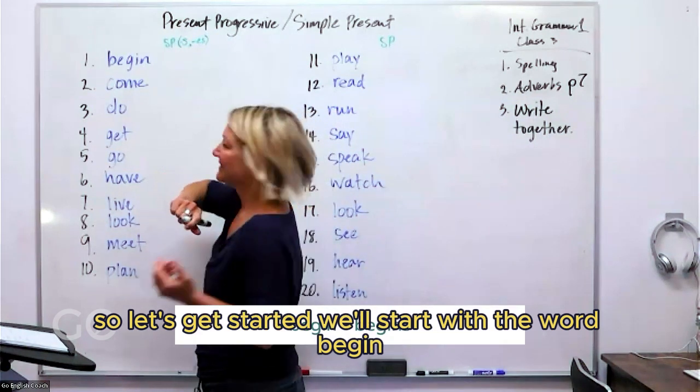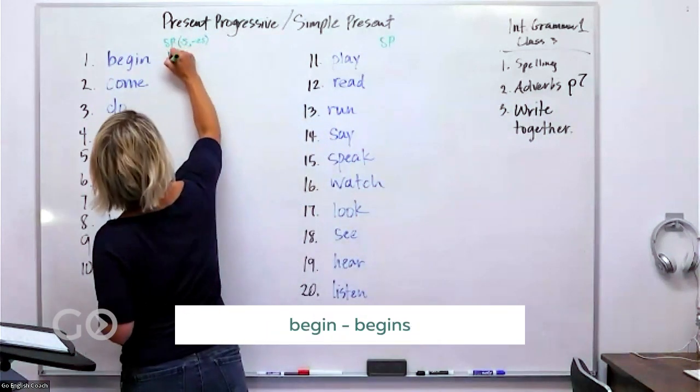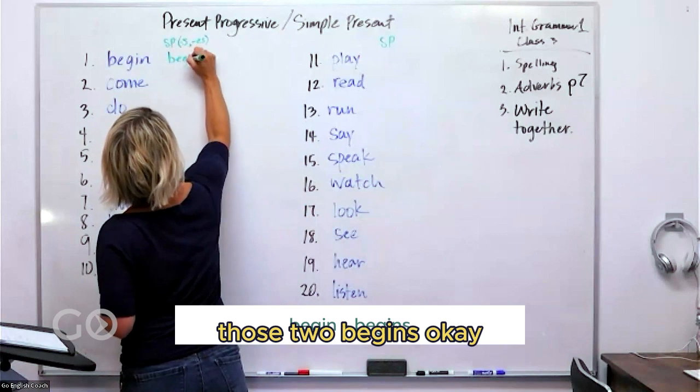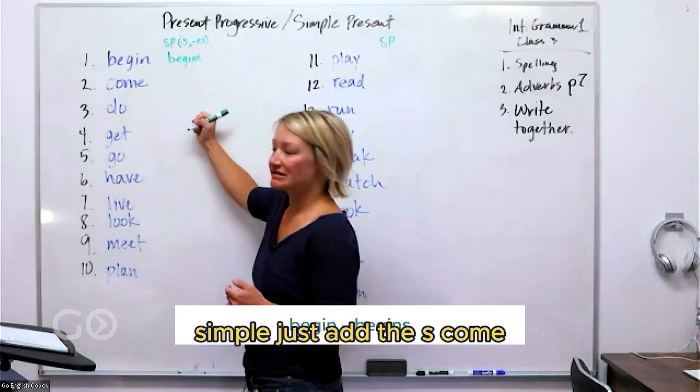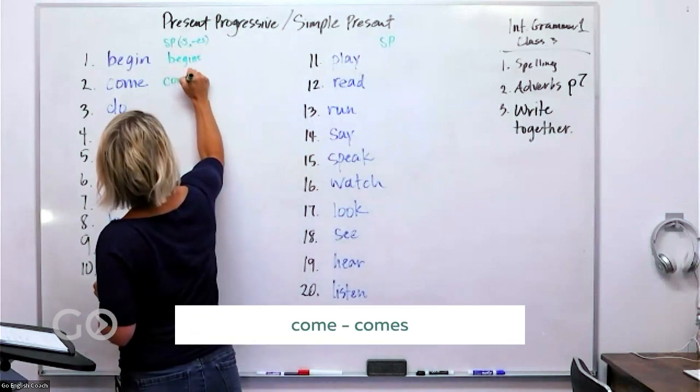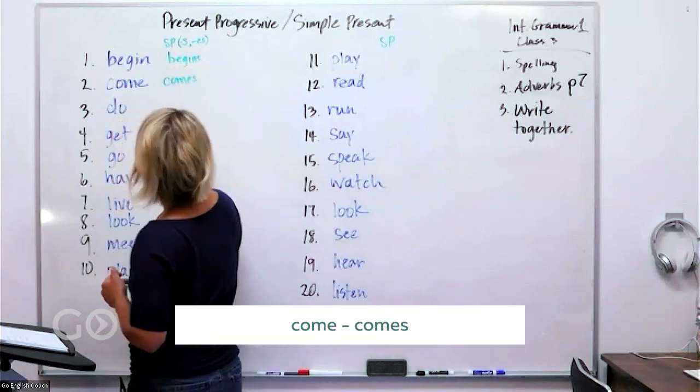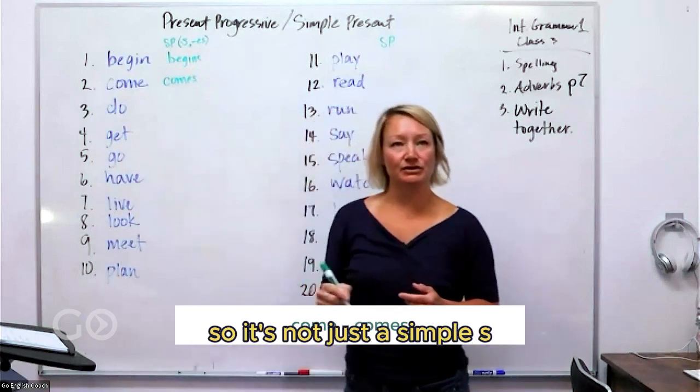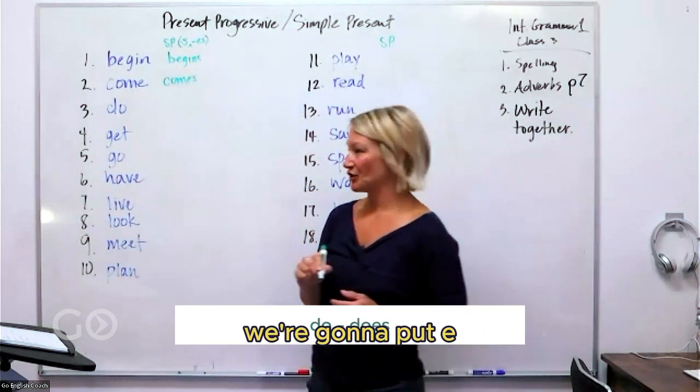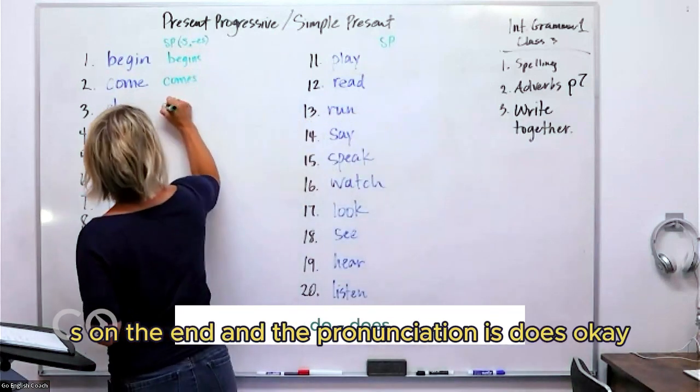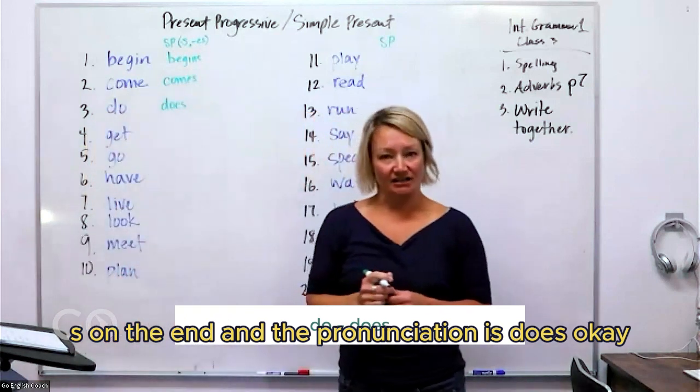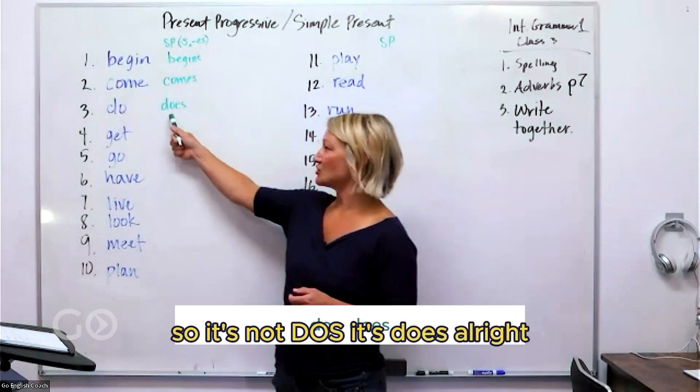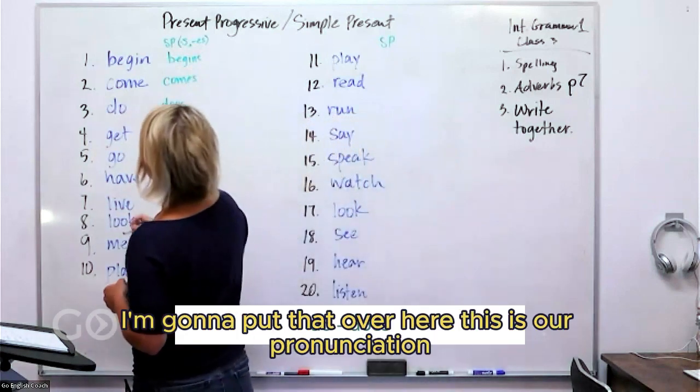Let's get started. We'll start with the word begin. Begin becomes begins, simple, just add the S. Come becomes comes. Now this one is a little bit irregular, so it's not just a simple S. We're going to put ES on the end and the pronunciation is does. It's not do's, it's does. I'm going to put that over here, this is our pronunciation: does.